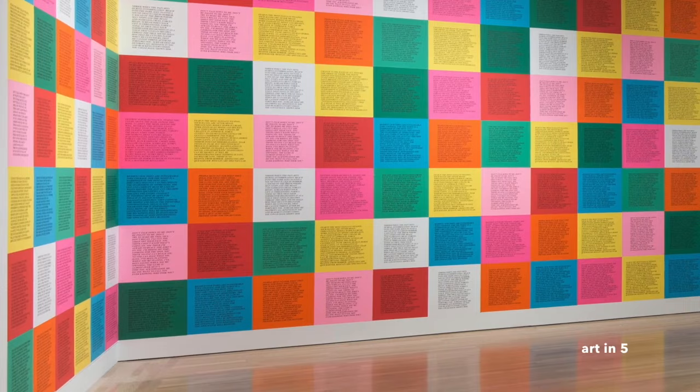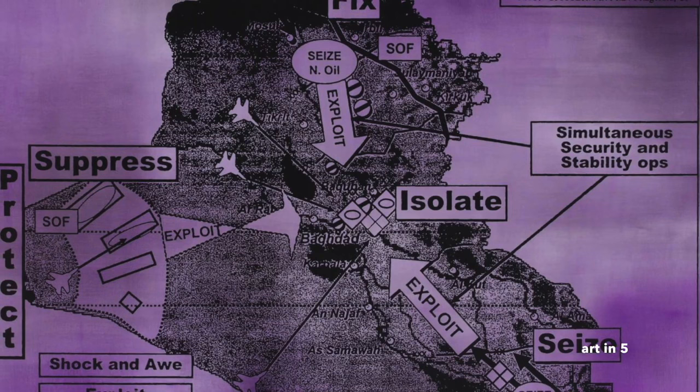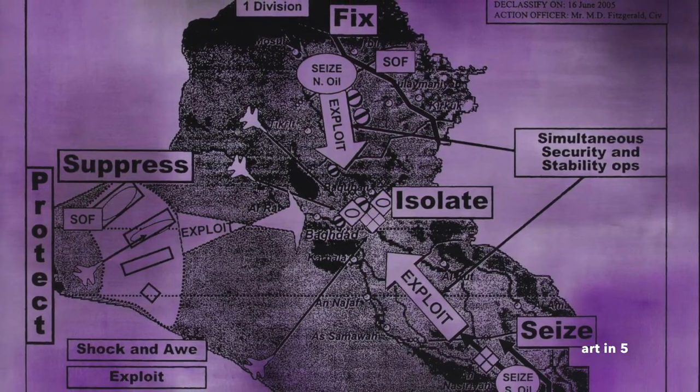Holzer has also collaborated with architects and designers to create large-scale public installations. For instance, her project Protect Protect, presented at the Venice Biennale in 2007, involved displaying excerpts from declassified U.S. government documents on LED signs wrapped around the facade of the Italian Pavilion. This installation highlighted issues of state surveillance, secrecy, and the erosion of civil liberties.